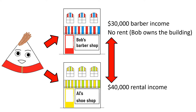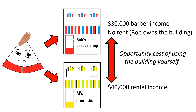Here's the opportunity cost. If Bob decides to use the building himself, he walks away from $10,000. You could say that, from the perspective of opportunity cost, it is costing him money to be a barber in his own building.